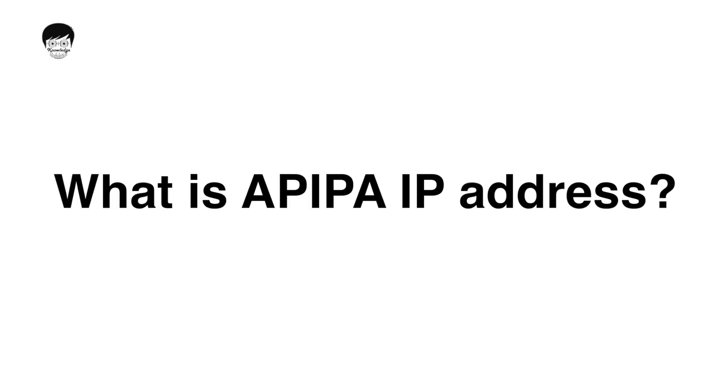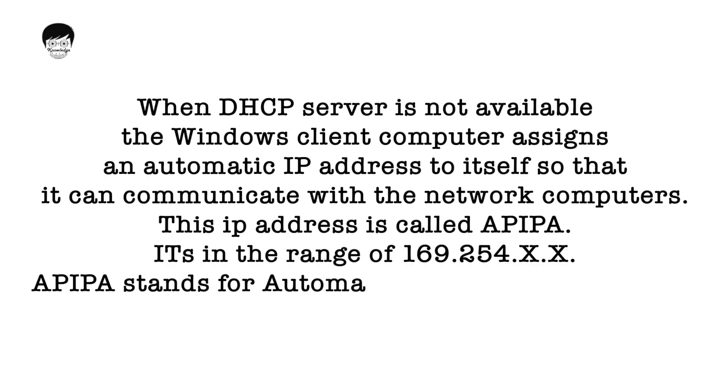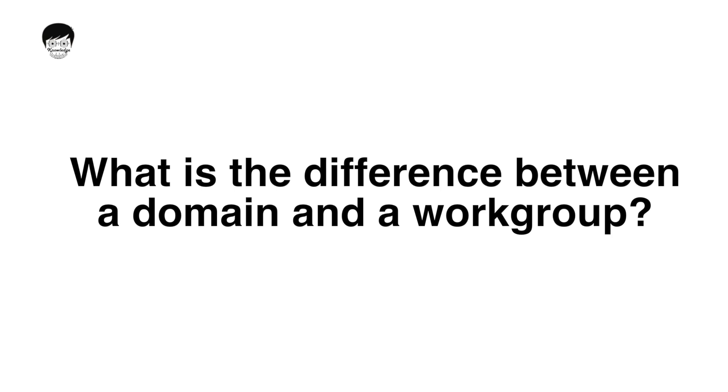The next question is: what is an APIPA IP address? When a DHCP server is not available, the Windows client computer assigns an automatic IP address to itself so it can communicate on the network — this is called APIPA. This IP address starts with 169. If you are getting an IP address starting with 169, you may conclude that your DHCP server is not responding. If you are using the client's computer, go to services and restart the DHCP services — it may help you resolve your issues.